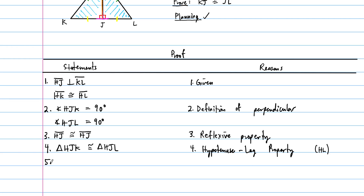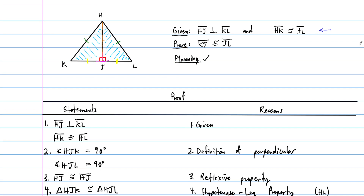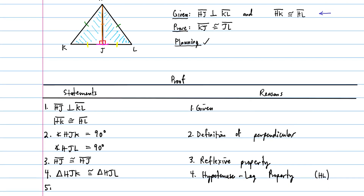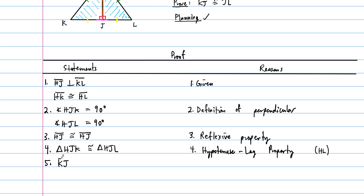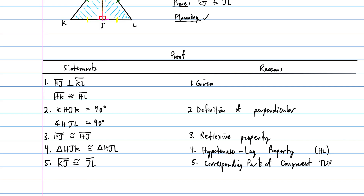We're almost done. Once we have congruent triangles, corresponding parts of congruent triangles are congruent — that's CPCTC. KJ and JL are corresponding sides of congruent triangles and therefore must be congruent to one another. So our conclusion is: KJ is congruent to JL. The reason is corresponding parts of congruent triangles are congruent. That's why we like the acronym CPCTC — but you have to know what it means.